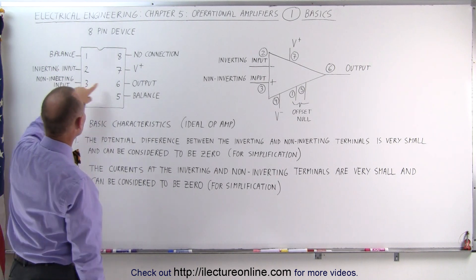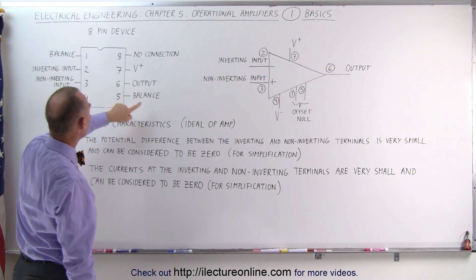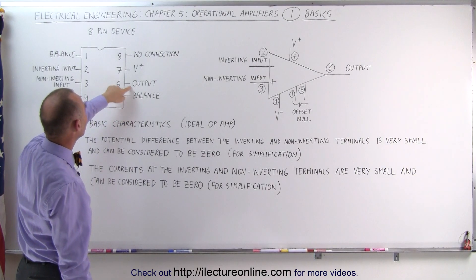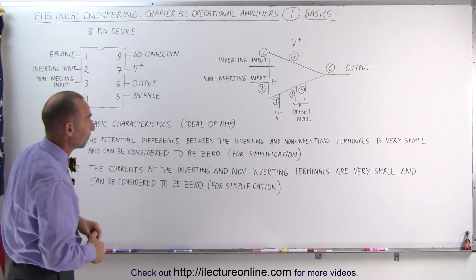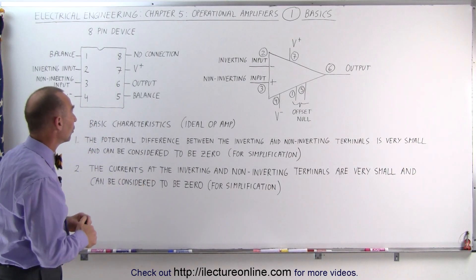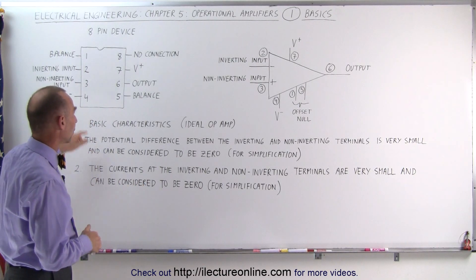The negative voltage, the positive voltage here on pin 7, we have the balance and the output, and then pin 8 has no connection at all, so that has no function except for mechanical sturdiness, an extra pin to hold the component down on the circuit board.